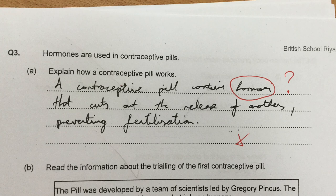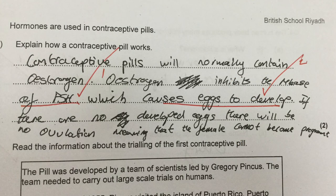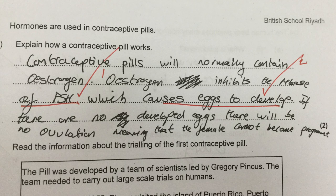We want the words FSH to be mentioned. This answer is an excellent example of how some students can write ambiguously. Contraceptive pills will normally contain oestrogen — brilliant, no marks though. Oestrogen inhibits the release of FSH — perfect, one mark. However, he then says oestrogen inhibits the release of FSH, which causes eggs to develop. Does the student mean that the inhibition of FSH causes the eggs to develop, or does he mean FSH normally causes the eggs to develop? This sentence could be helped if the student had written: oestrogen inhibits the release of FSH, which normally causes eggs to develop.